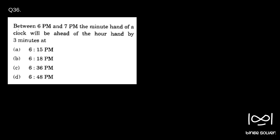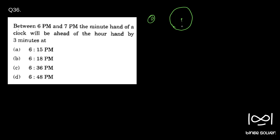One simple way of solving this is to just draw out the figures. So for Option A, this is the clock — the hour hand at 6 o'clock is here. So this is 6, this is 9, 8 will come somewhere here, 7 will come here. At 6:15, the minute hand will be here, and the hour hand will be somewhere like this. So clearly, Option A is wrong.